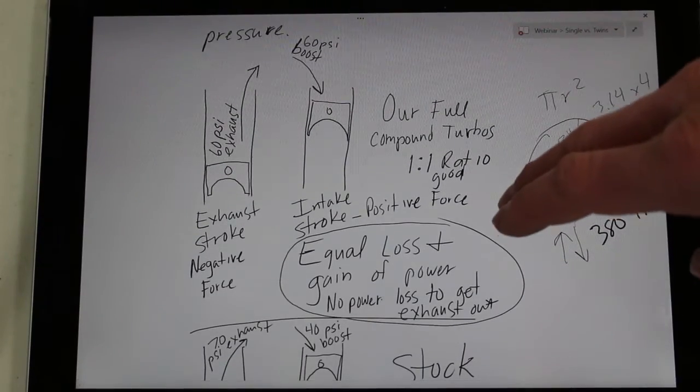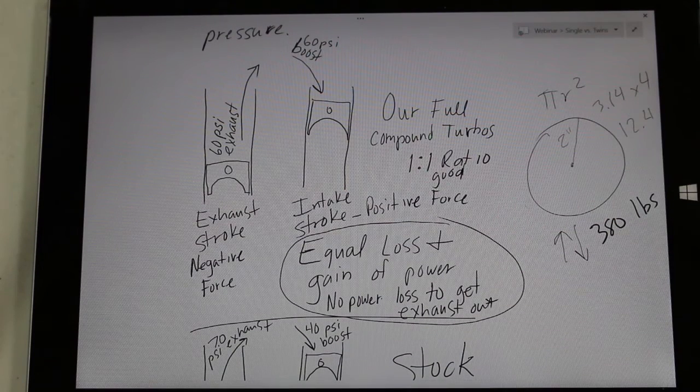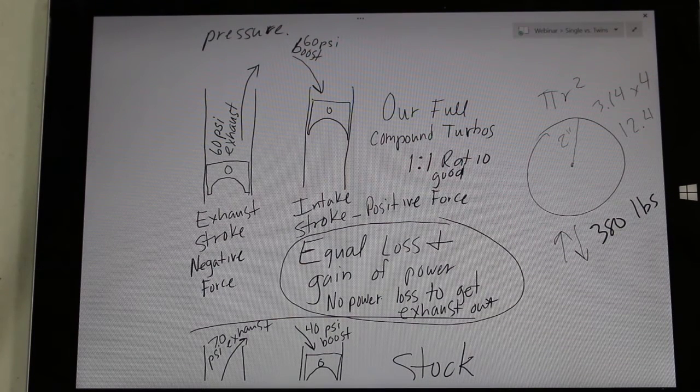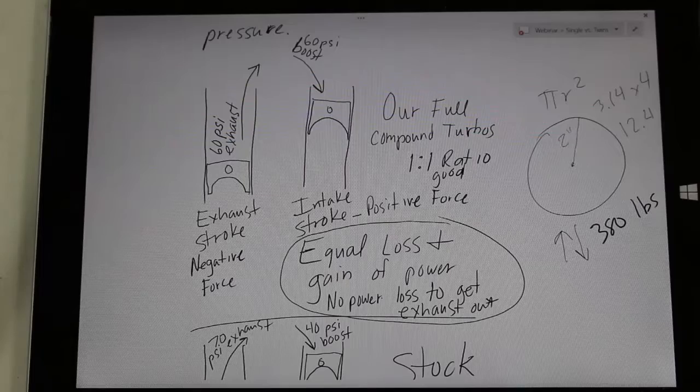This has a huge impact on the actual horsepower. On our full compound kits, like say the 62 over an S475, that will be even at a 1 to 1 ratio or even better. So typically 60 PSI on one of our full kits will have about a 55 to 60 PSI of exhaust drive pressure.